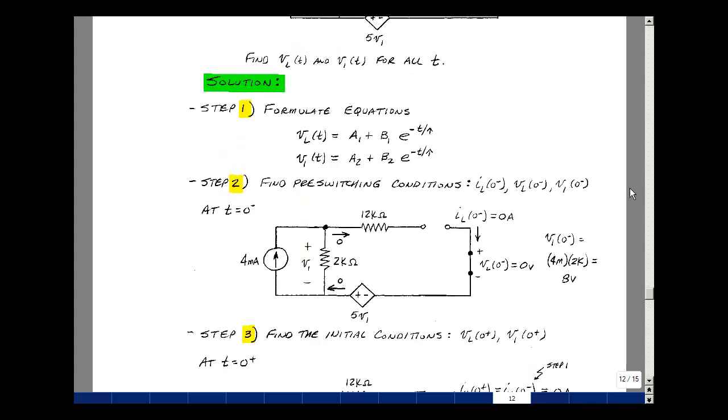Step two of our algorithm is to find the pre-switching conditions of our variables, in this case v sub l and v1. I'm mostly going to find the current in the inductor just before we switch, because this can't jump instantaneously. I'm going to use this to help solve my problem. Prior to the switch closing, we still have an open circuit here. We'll assume that the inductor is in steady state, so it looks like a short circuit. So the voltage across it's equal to zero.